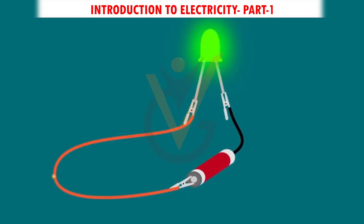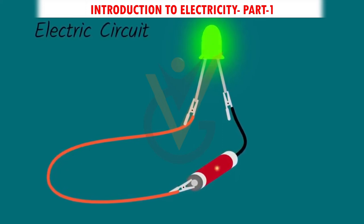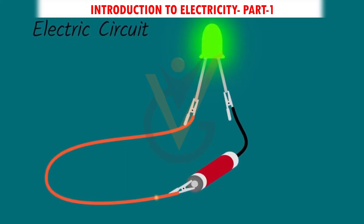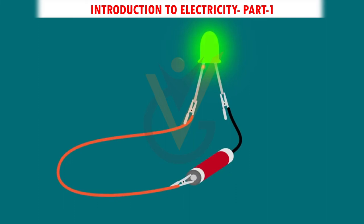To use electric current to power things, you have to create a complete pathway for the electric current to follow — this is called an electric circuit. An electric circuit is like a racetrack of conductive materials that lets electrons flow in a specific way. For example, to light a light bulb, you need a power source like a battery, connect wires to the battery, and attach the light bulb. Just like that, the circuit is completed and the light bulb lights up.